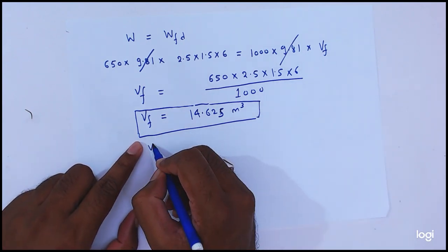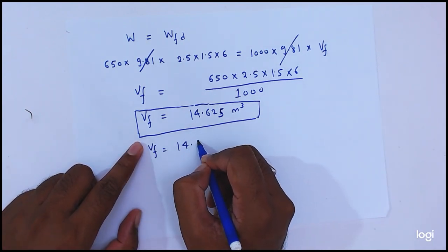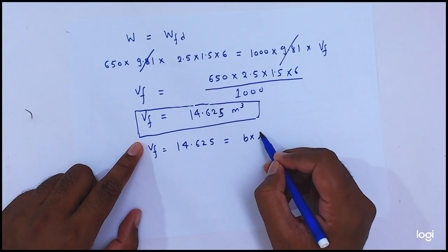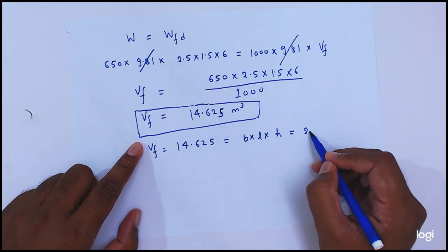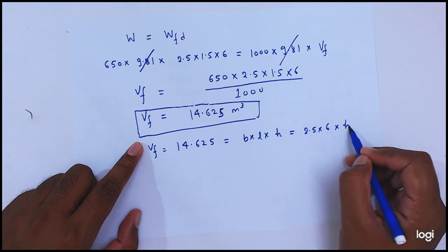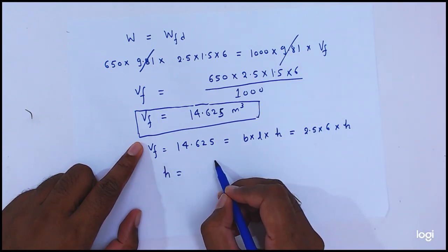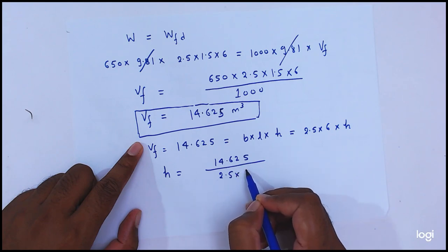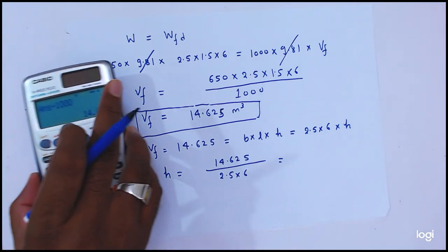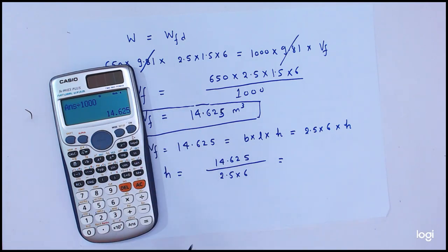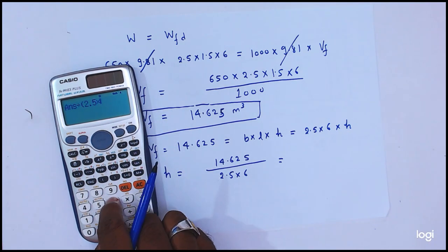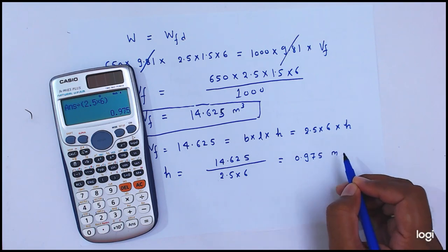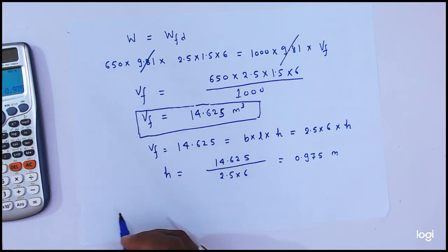Since V_F equals 14.625, and V_F equals B times L times small h, we have: 14.625 equals 2.5 times 6 times small h. So small h is equal to 14.625 divided by 2.5 times 6, which comes to 0.975 meter.